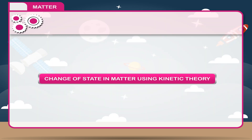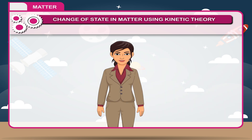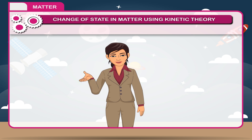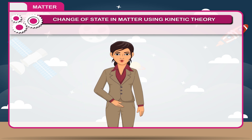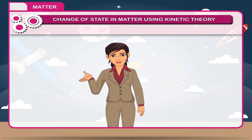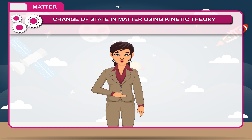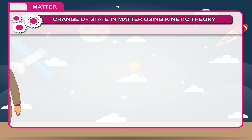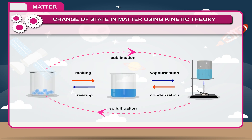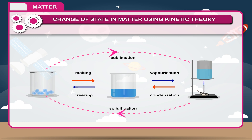Change of state in matter using kinetic theory. The kinetic theory of matter is also useful for explaining why substances can change state under certain conditions. You know that water can be solid, liquid, or gas. But how does this happen? A phase change occurs when energy is added to or taken away from matter, usually in the form of heat.